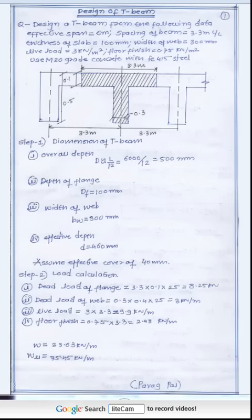The diagrammatic representation of the T-beam is given here. Overall depth is calculated by D equals to L by 12 to L by 15. So we get value 500 mm. Depth of flange DF is 100 mm. Width of web BW is 300 mm. Effective depth D equals 460 mm. We are deducting clear cover from effective depth, assuming effective cover of 40 mm.